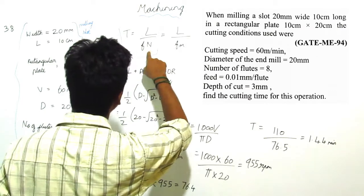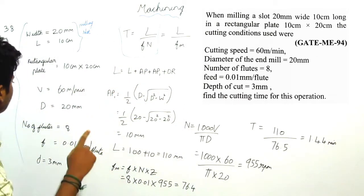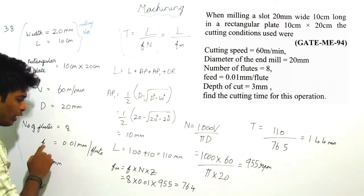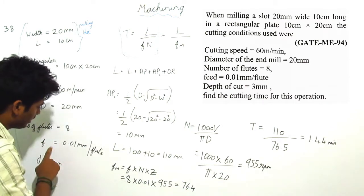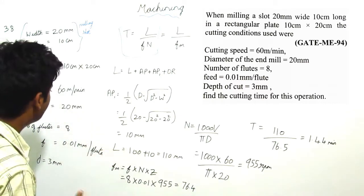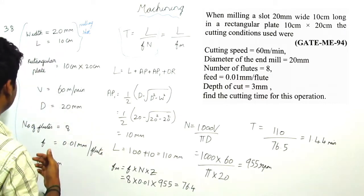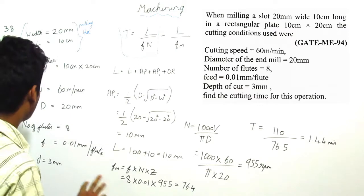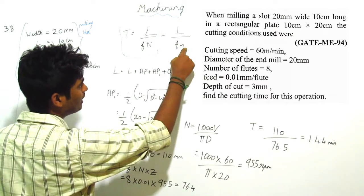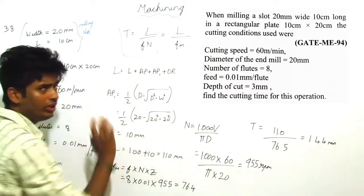This can be written if in the question they have given feed per tooth or mm per flute, or in case if they have given number of teeth or number of flutes, then we have to take T is equal to L by Fn. Fn is machine feed.